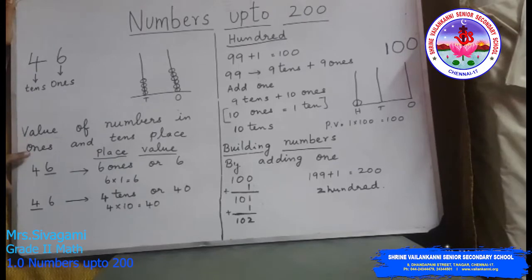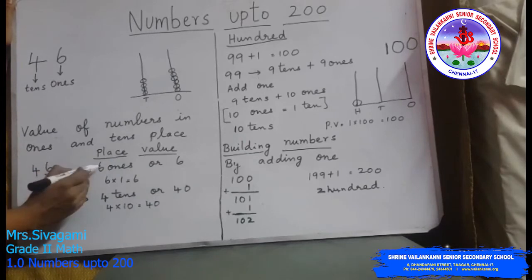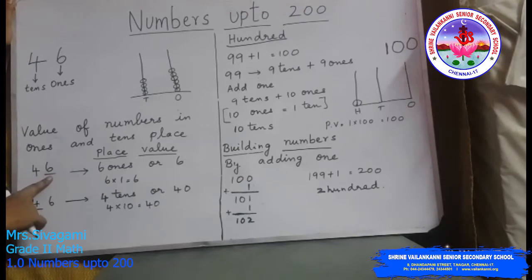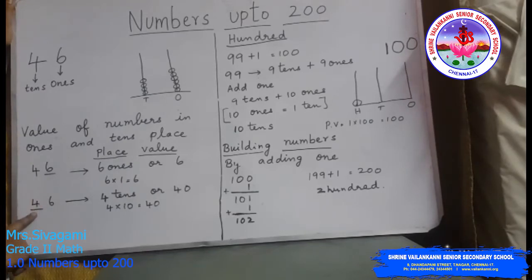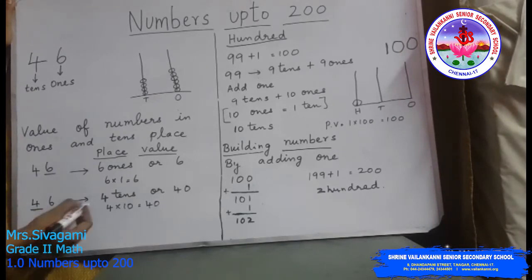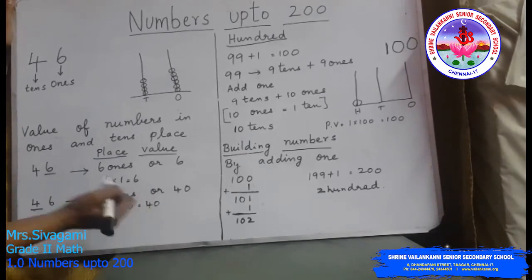Let us see the value of numbers in the ones and tens place. We will take the same number, 46. The place value of the number in the ones place is 6 ones, or 6. To find the place value of the number in the ones place, we multiply the number by 1 — 6 ones are 6. To find the place value of the tens place number, we multiply the number by 10. So the place value of 4, which is in the tens place, is 4 tens or 40 — that is 4 into 10, which equals 40.